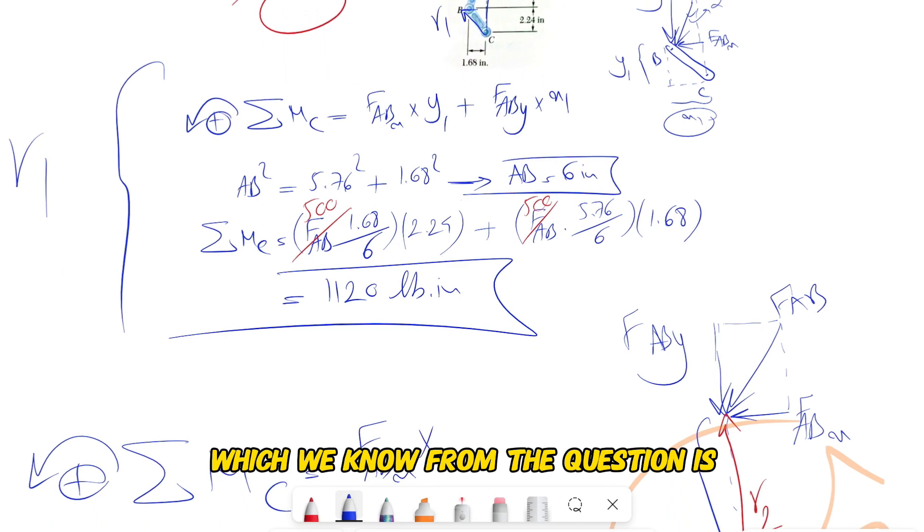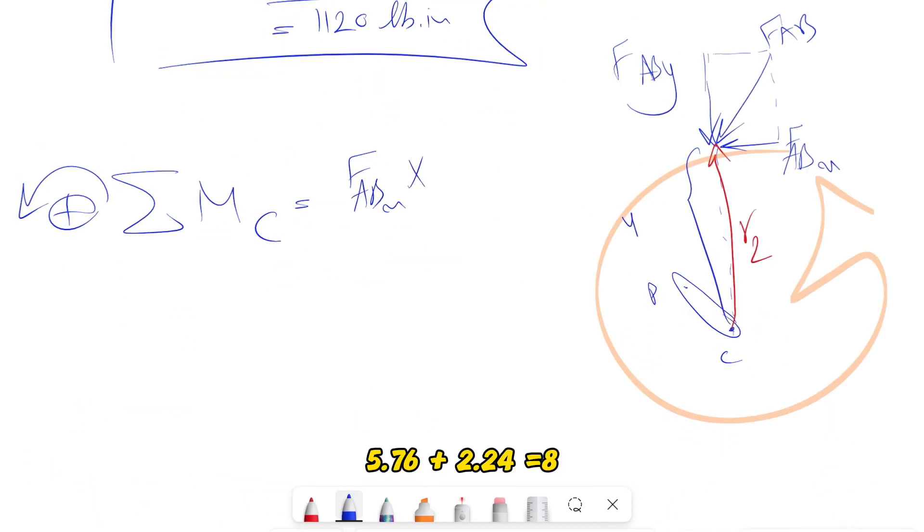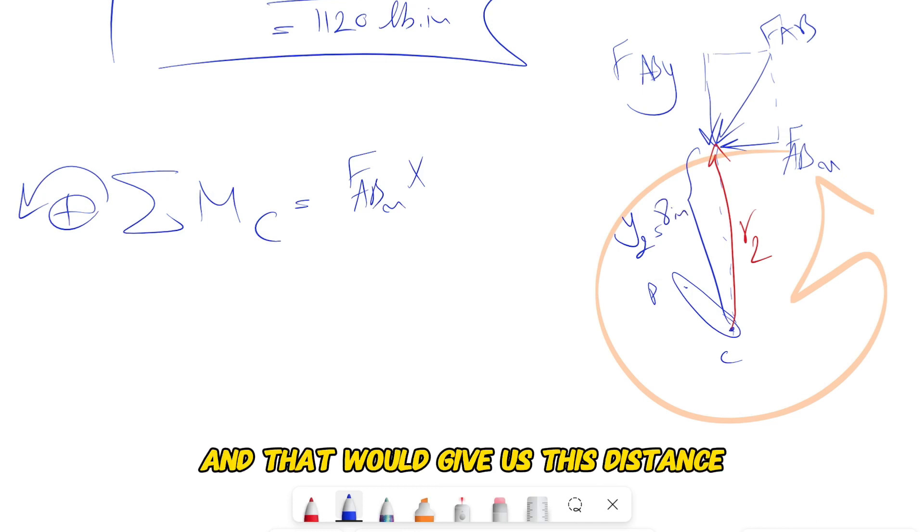Which is simply this distance, which we know from the question is 5.76 plus 2.24, and that would give us this distance. Let's call it y2: 8 inches.